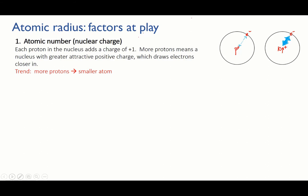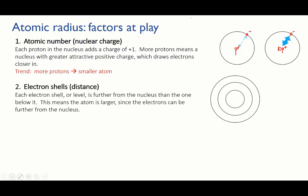The second factor is the electron levels. Each electron shell in the atom is further from the nucleus than the last. So the more electrons an atom has, and the more electron shells are occupied, the larger the atom will be.